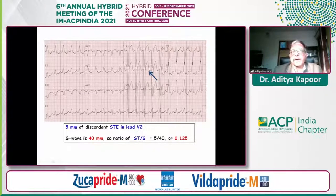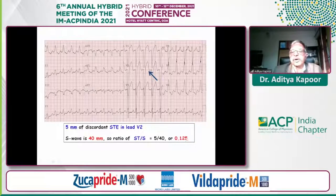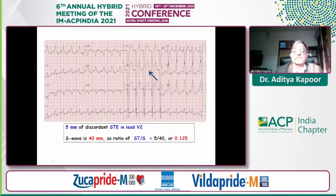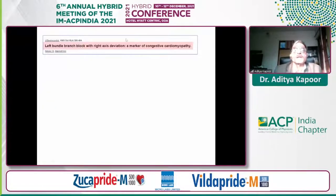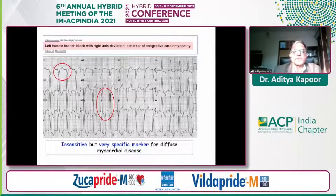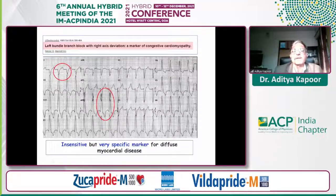This is a good way to diagnose acute MI in a peripheral setting using ECG. The ST elevation divided by the depth of the S wave should be more than 0.25. If the ratio is less than 0.25 — as in this case where it was 0.125 — substantial literature suggests the chance of acute MI is pretty low. Additionally, left bundle branch block with a right axis deviation — a discordant axis — is a very specific marker for diffuse myocardial disease, and one should always perform a good echocardiogram in such patients.